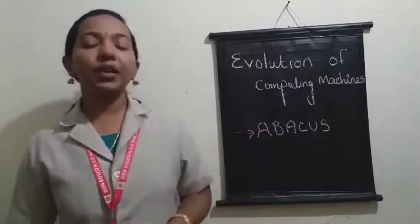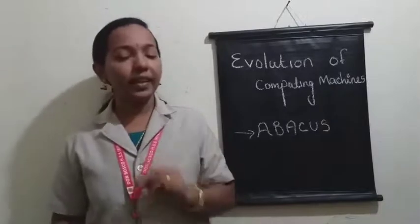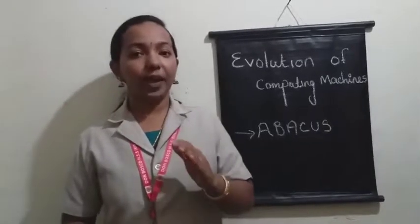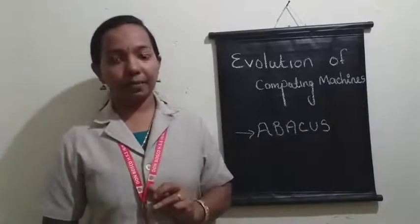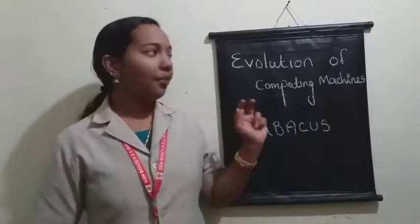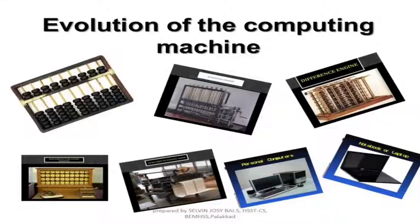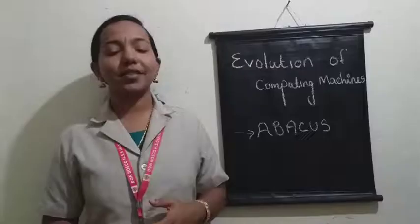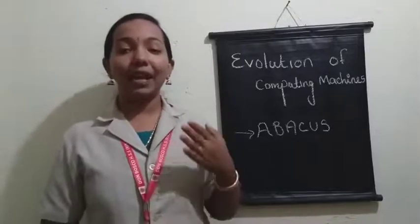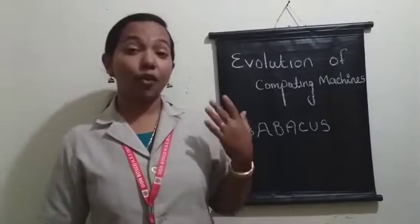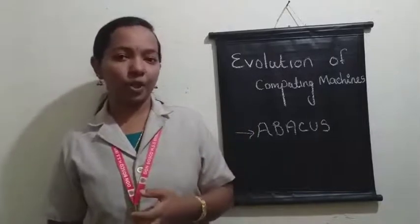In this chapter, we are going to deal with different concepts. First, evolution of positional number system. After that, evolution of computing machines — different machines that played a major role in the development of the modern computer. We are not going to discuss all machines, only the special machines that played a major role — those that can be called predecessors of the modern computer.